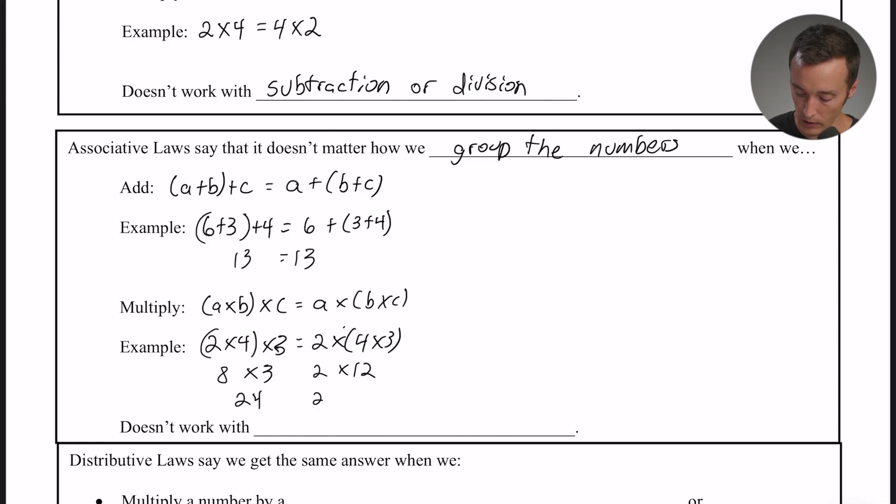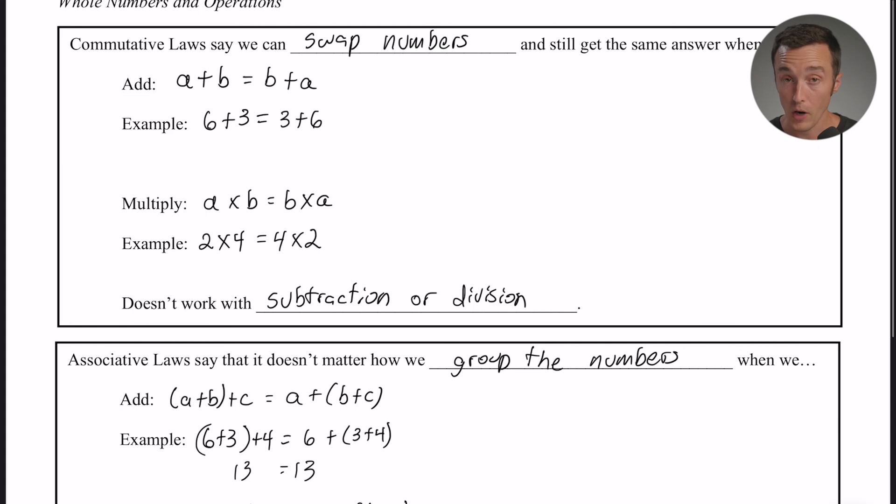Once again, doesn't work with subtraction and it also doesn't work with division. So far so good. Just quick recap: commutative property says you can swap the numbers, associative property says you can regroup the numbers.